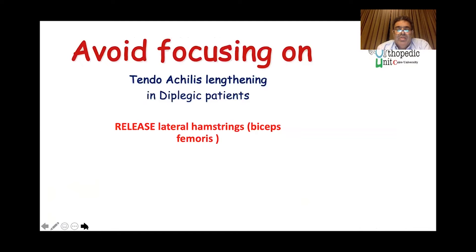When performing a multilevel release, focus on two important points: never perform tendo-Achilles lengthening alone in the diplegic — this is a very common mistake. Also, there is no need to do a lateral hamstring release; you should always keep the biceps femoris without lengthening.